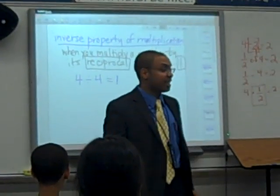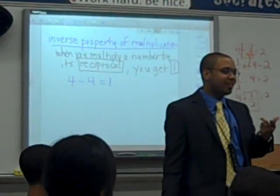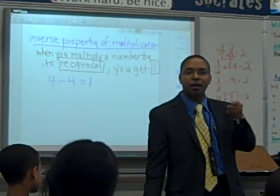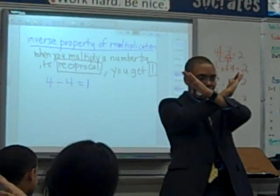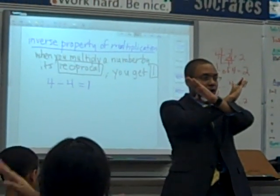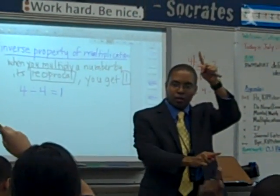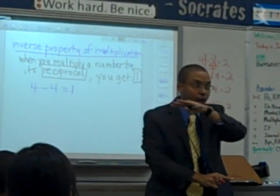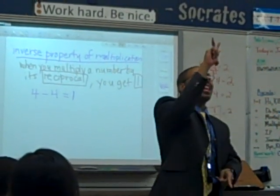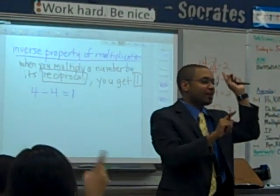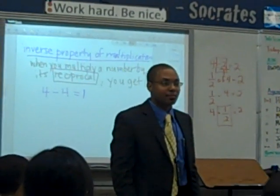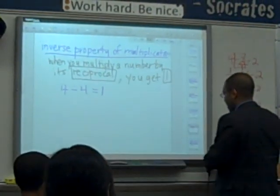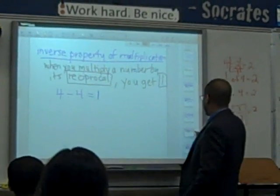The inverse property is the same thing as dividing, right? But when you divide, you really multiply by the reciprocal. If the number is not a fraction, what do you do? Put it over one and then flip it. It'll always get back to one.